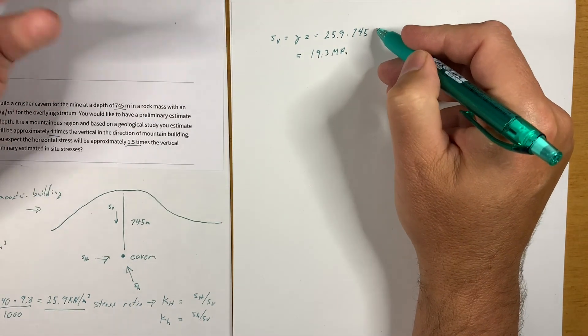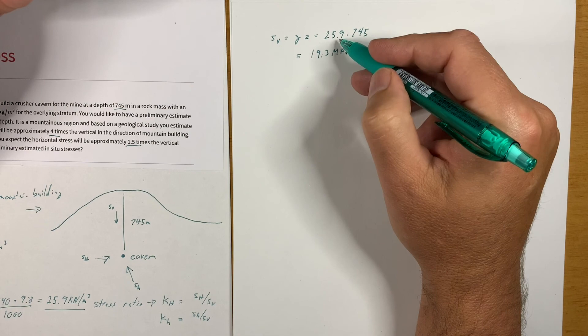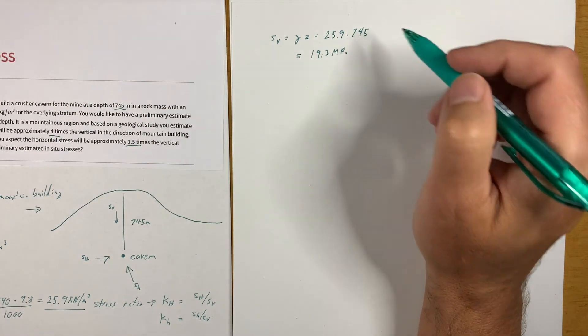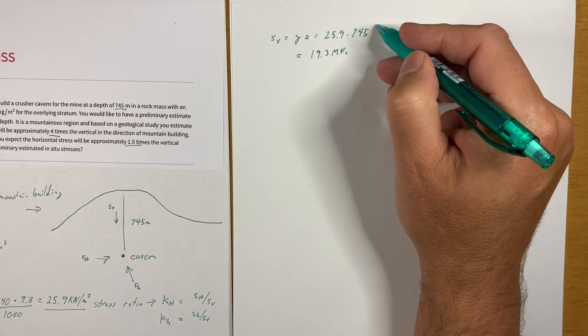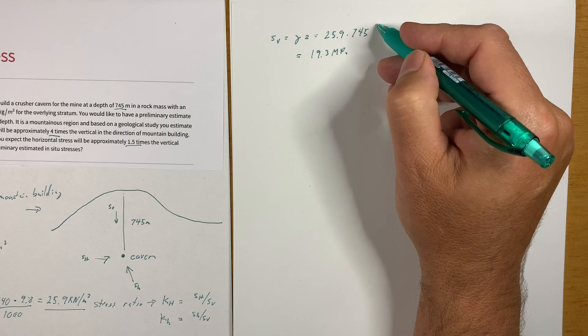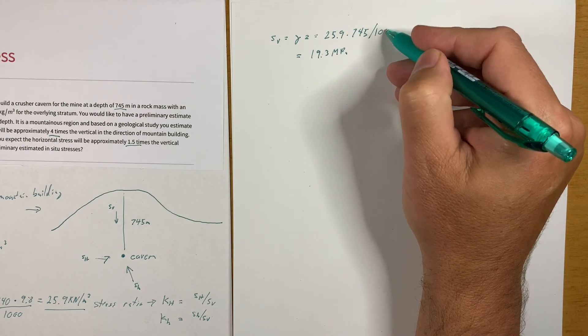And you also have to correct for the units right, so we're going from kilonewtons to mega newtons, so we're going to have to divide that again by a thousand to get 19.3 MPa is S_v.